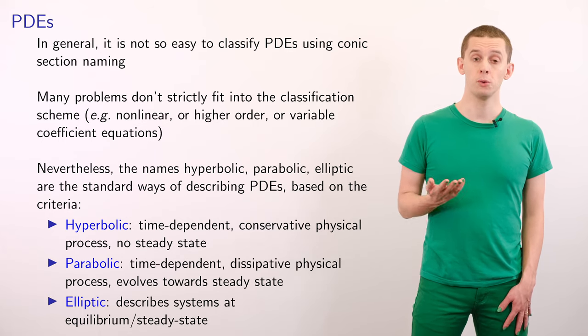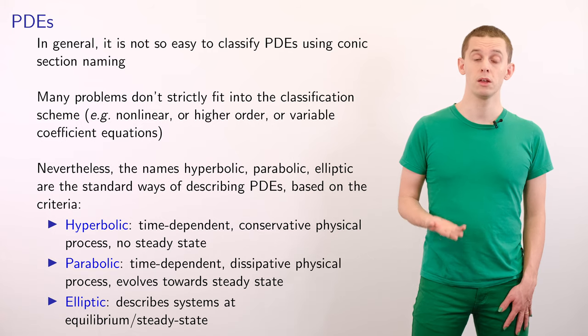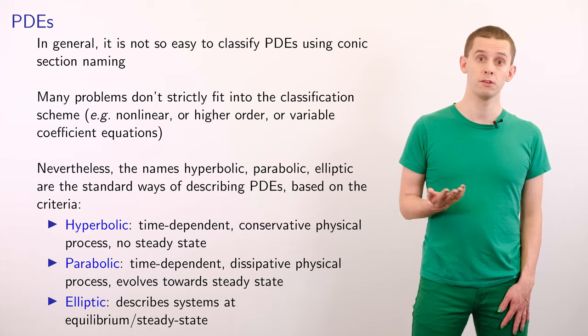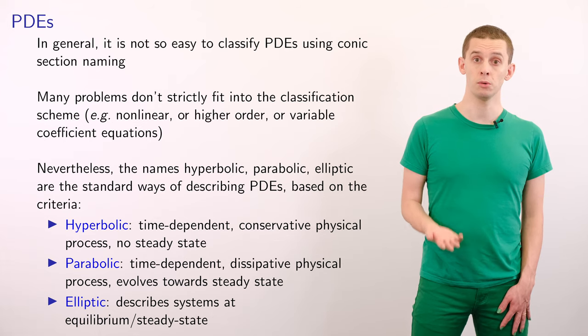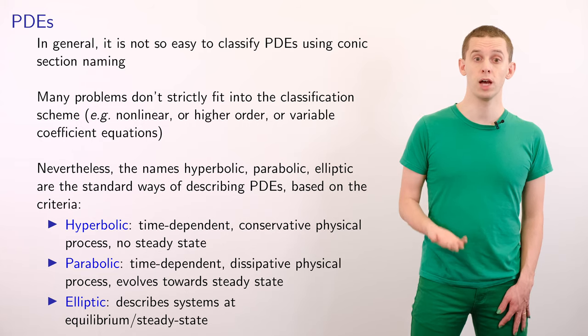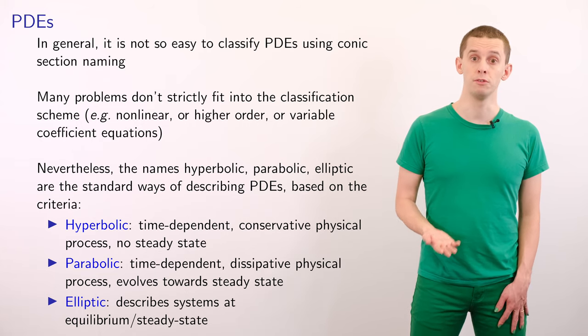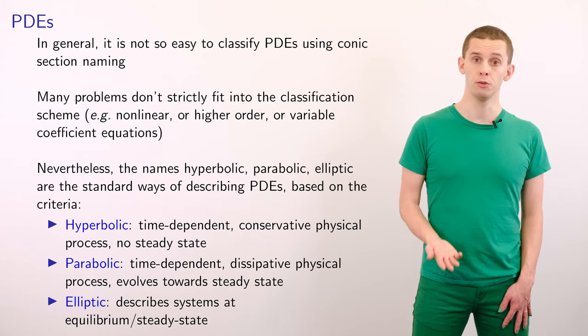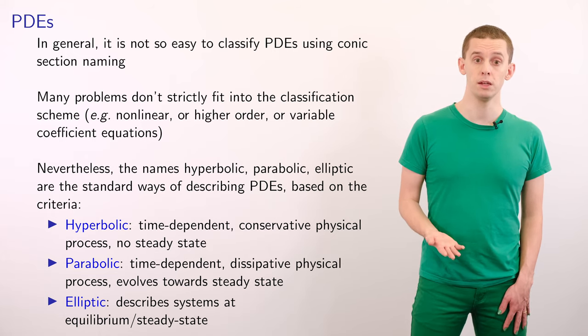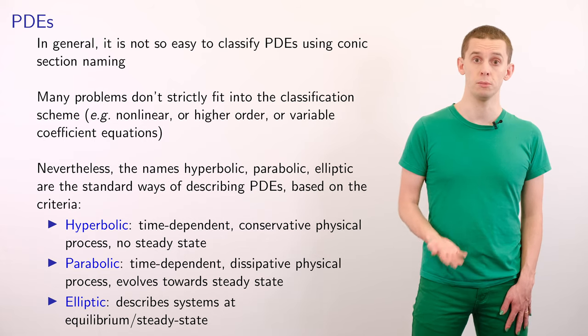For example, we find that hyperbolic PDEs often represent time-dependent conservative physical processes that don't have any dissipation. Parabolic PDEs often represent time-dependent dissipative physical processes that evolve toward a steady state. And elliptic PDEs represent systems that are at equilibrium or some steady state.